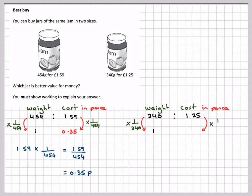Do the same to the other side, so it's 1 over 340. So I need to work out 125 times 1 over 340, which is 125 over 340, which is 0.36 pence.